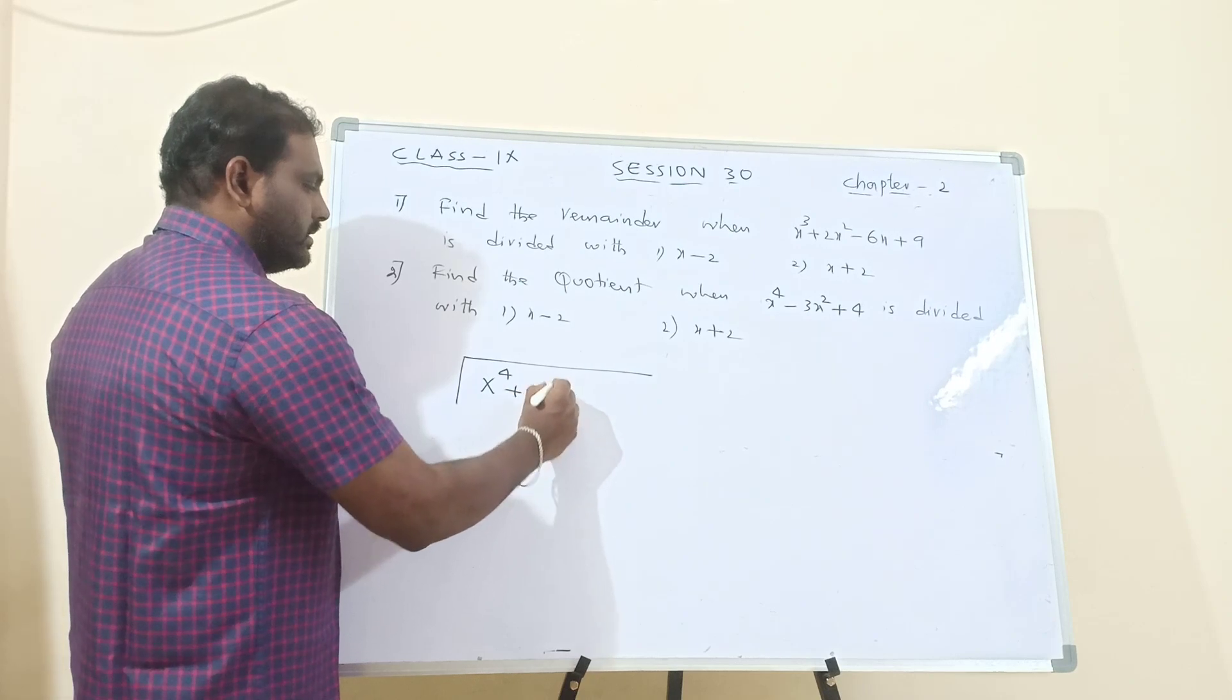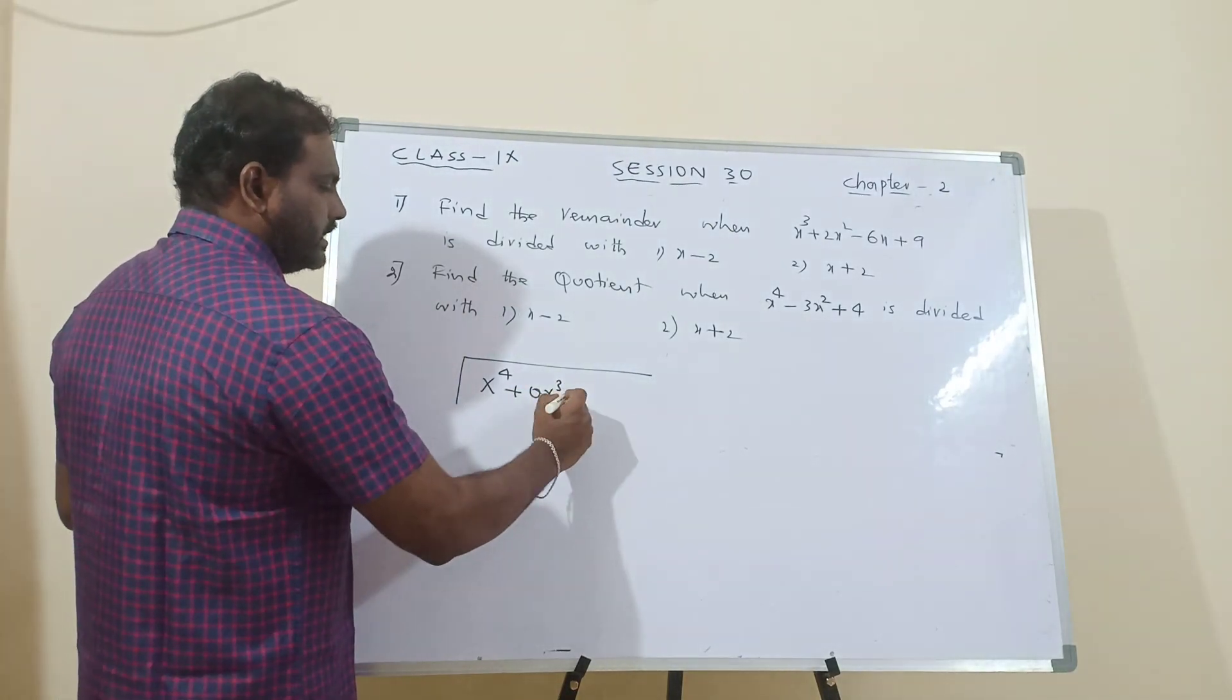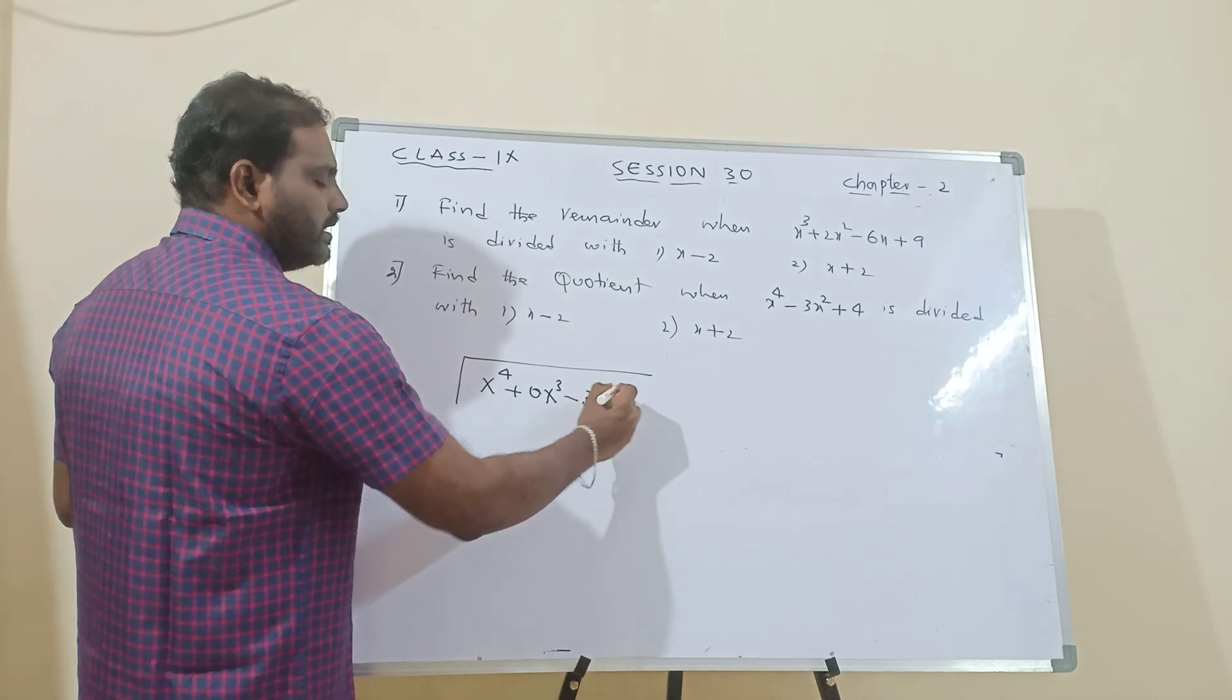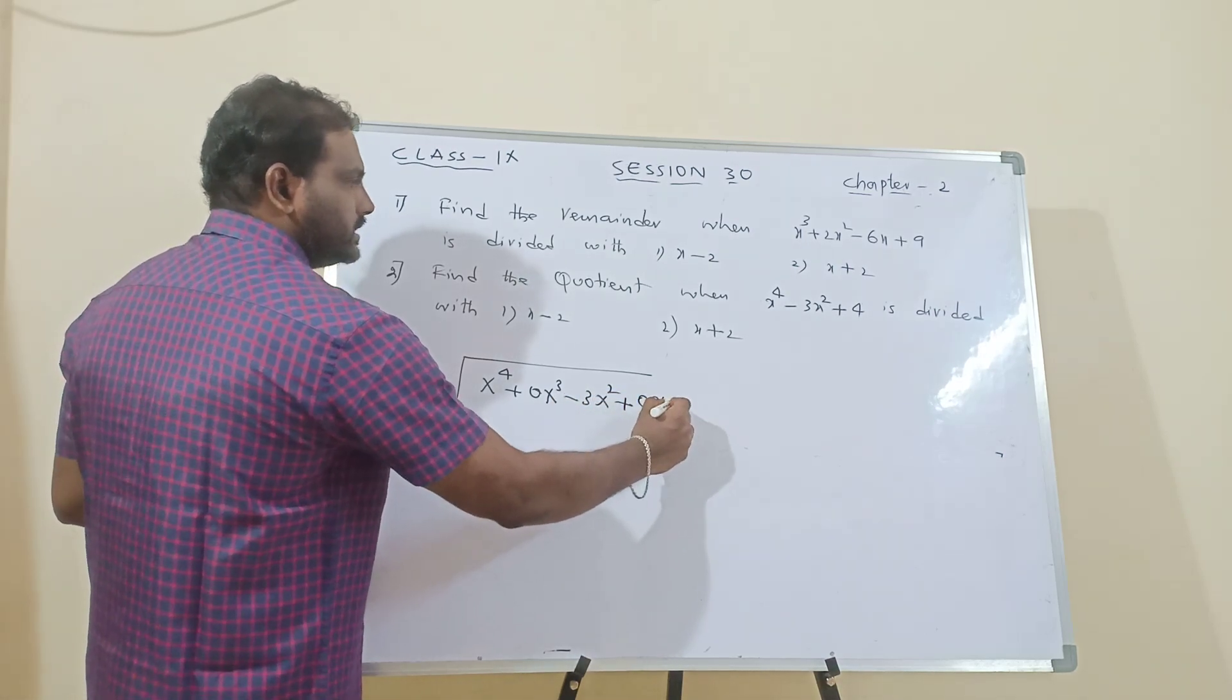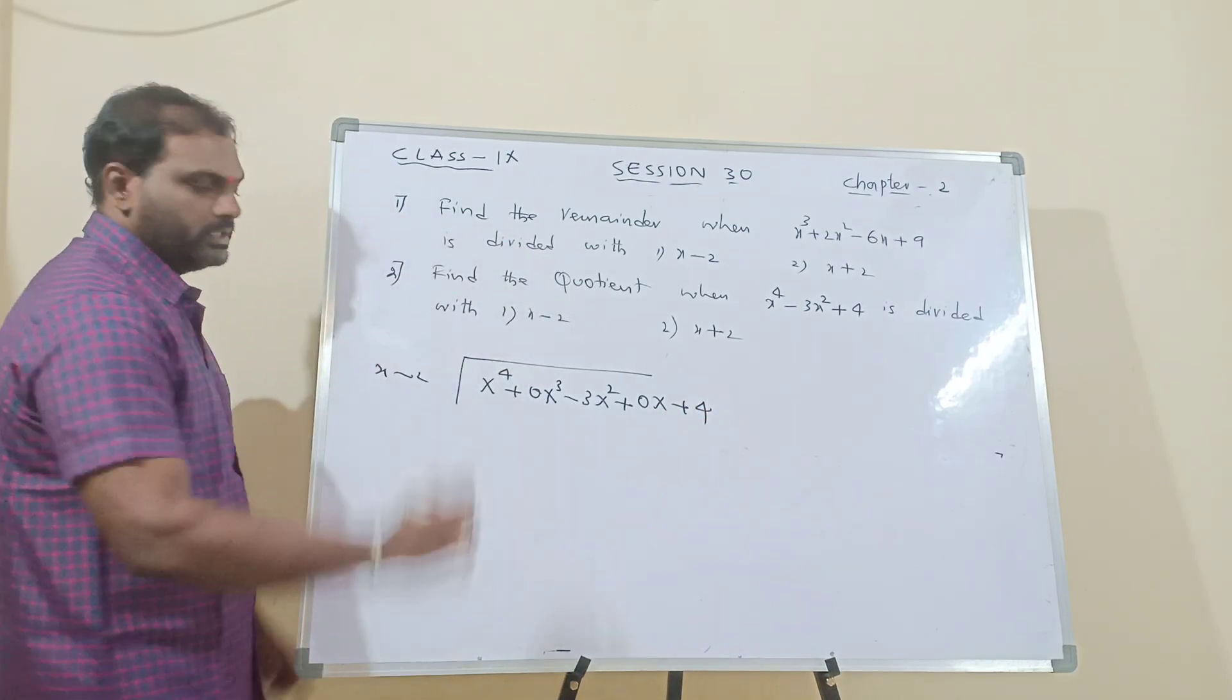So, the degree must be in the descending order. So, it is not given, so, I should take 0x cube plus, sorry, x cube coordinates there minus 3x square and x is not given 0x plus 4. So, this is to be divided by x minus 2.